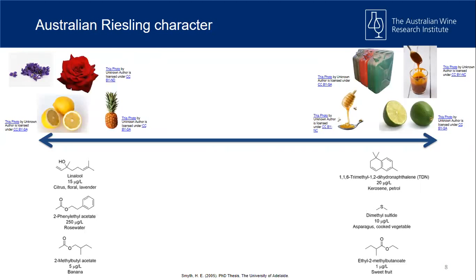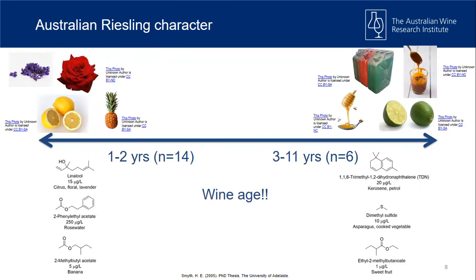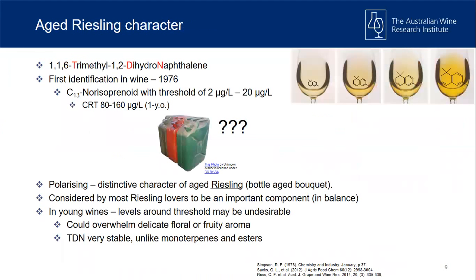At the other end of the spectrum: kerosene, petroleum, caramel, honey, lime, candied citrus. The chemicals associated with these are 1,1,6-trimethyl-1,2-dihydronaphthalene (TDN), dimethyl sulfide, and some other esters. The thing contributing to this spectrum was simply wine age — at one end we have young one-to-two-year-old Rieslings; at the other, older wines with caramel, honey, cooked fruit, and kerosene descriptors.